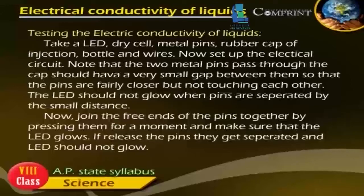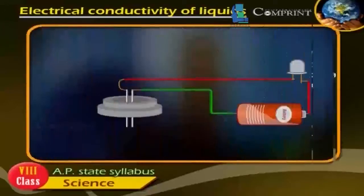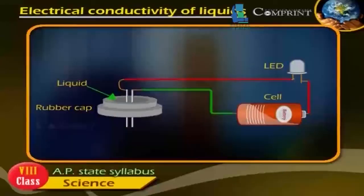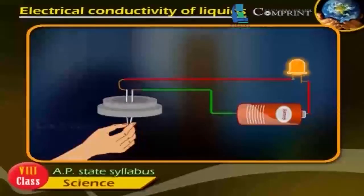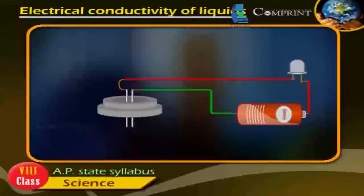Now set up the electrical circuit. Note that the two metal pins passing through the cap should have a very small gap between them, so that the pins are fairly close but not touching each other. The LED should not glow when the pins are separated by a small distance. Now join the free ends of the pins together by pressing them for a moment and make sure that the LED glows. If you release the pins, they get separated and the LED should not glow.